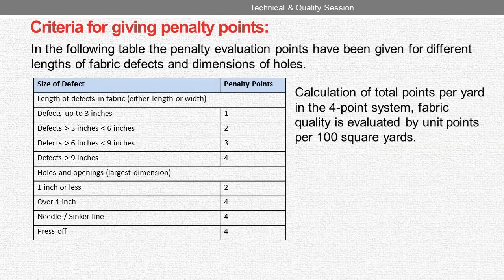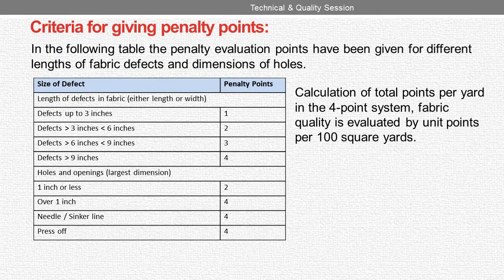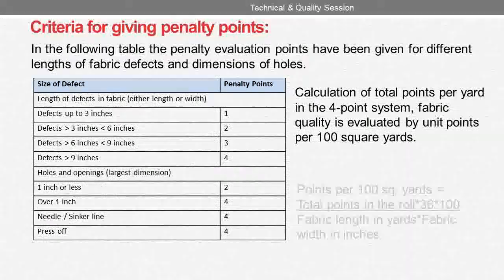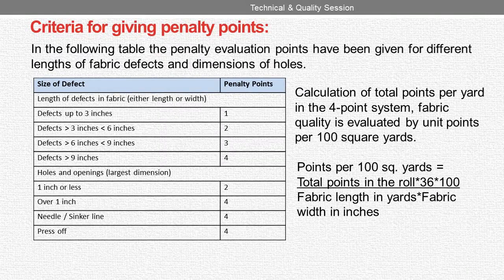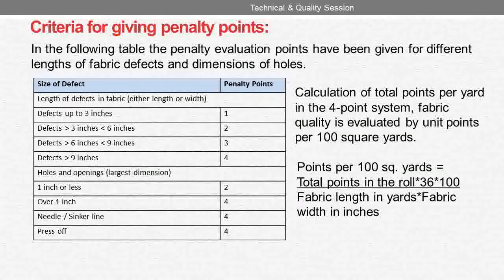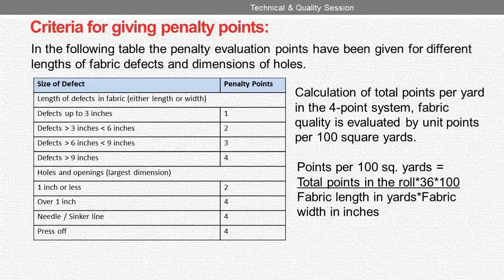Calculation of total points per yard: in the 4-point system, fabric quality is evaluated by unit points per 100 square yards. Points per 100 square yards = (total points in the roll × 36 × 100) ÷ (fabric length in yards × fabric width in inches).